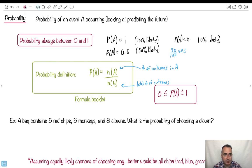Let's do an example. The examples are always really boring, like there's a bag with chips or different things in there. I just figured, okay, five red chips, three monkeys, eight clowns. I don't know why this bag is there. We have to assume that it's going to be equally likely chances. Better would be to make them all chips or red, green, blue, whatever. But let's just say, so a bag contains five red little pieces, three monkeys and eight clowns. What's the probability of choosing a clown? It's a bit of a ridiculous example, but let's just assume you're picking randomly.